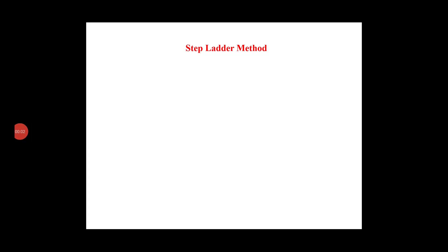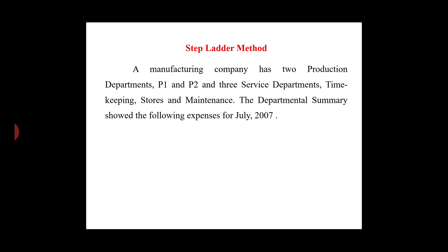Dear students, next we will discuss the overhead distribution using the Step Ladder Method. A manufacturing company has two production departments P1 and P2, and three service departments: timekeeping, stores, and maintenance. The departmental summary shows the following expenses for July 2017. We will use re-apportionment by the step ladder method.